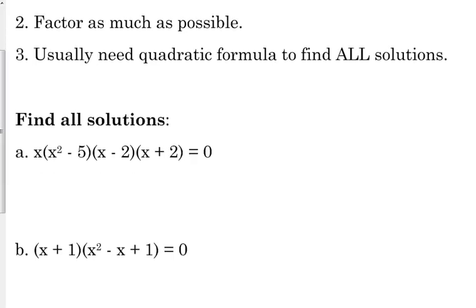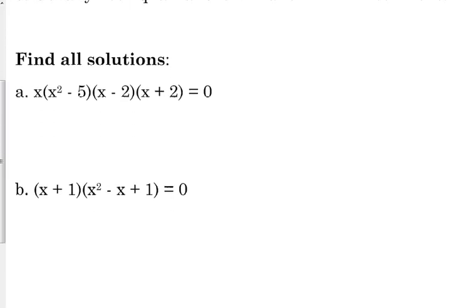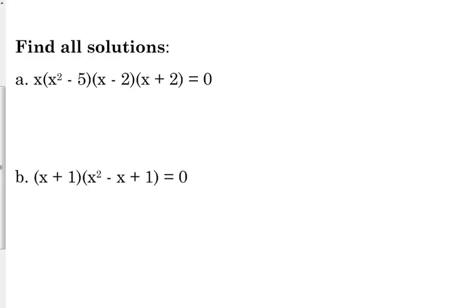It's already in factored form, so we really don't have to do any work there. All we have to do is set each of our factors equal to zero and solve them for x, and that will give us all of our solutions. First of all, let's talk about how many solutions we should have with this problem. We've got one here, two here, one, one. So we should have five solutions for this equation.